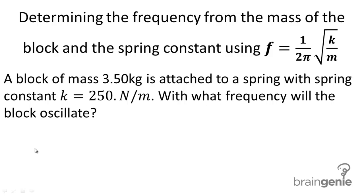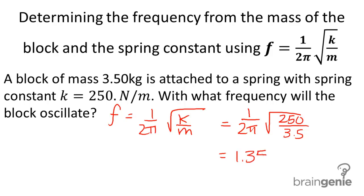We're given all the information we need. We're just going to use the equation stated above, 1 over 2 pi times the square root of k over m. Once we plug in our numbers, we get 1 divided by 2 pi times the square root of 250 divided by 3.5, and we get a final answer of 1.35 hertz.